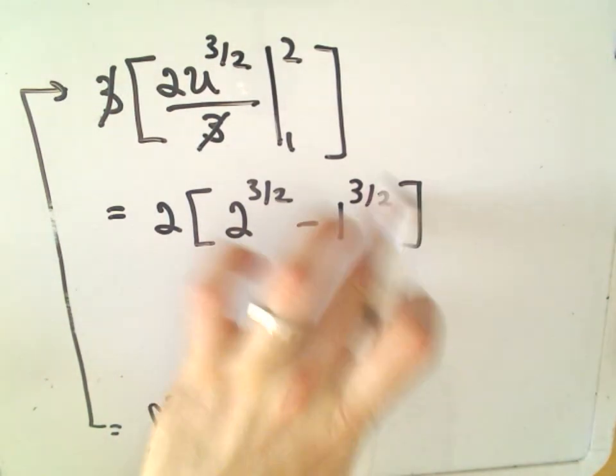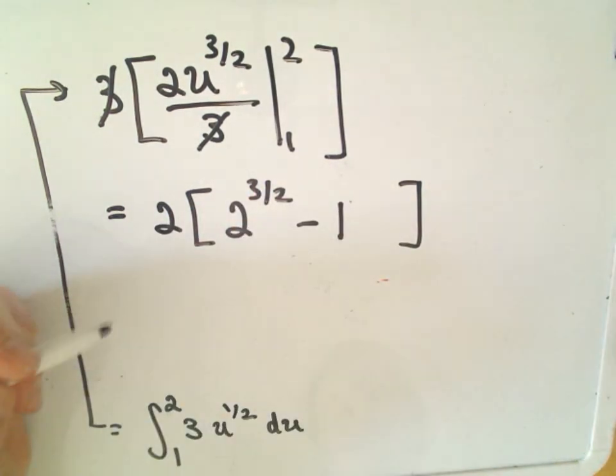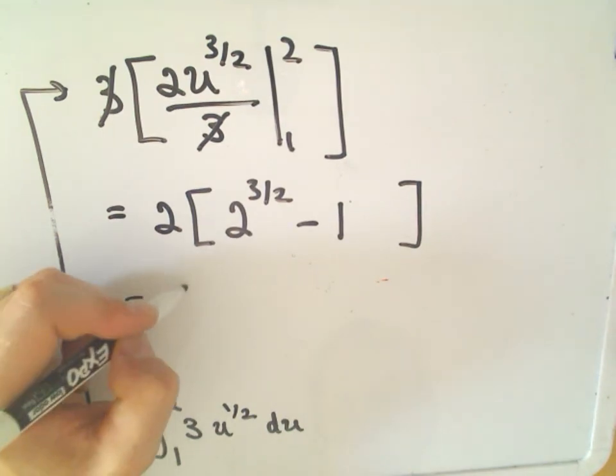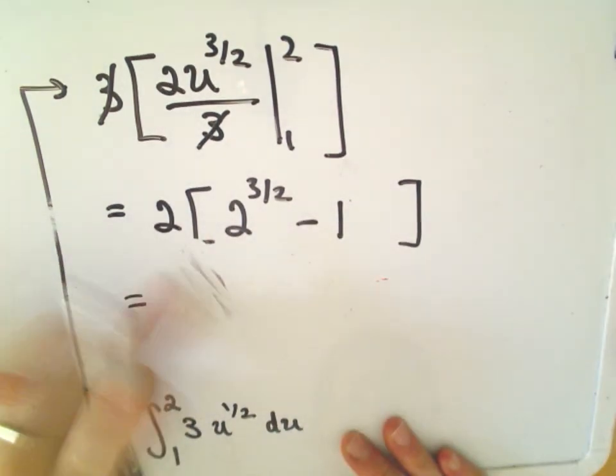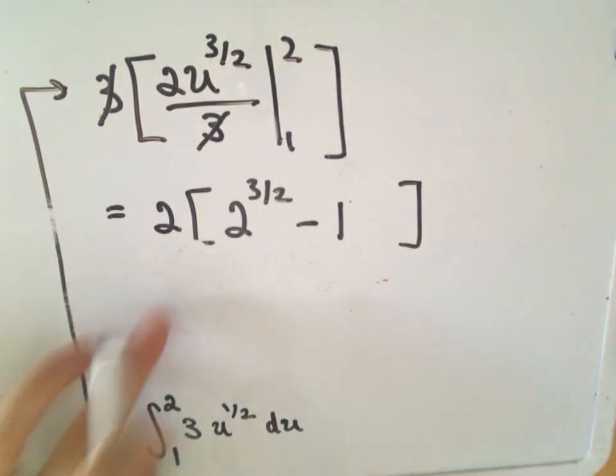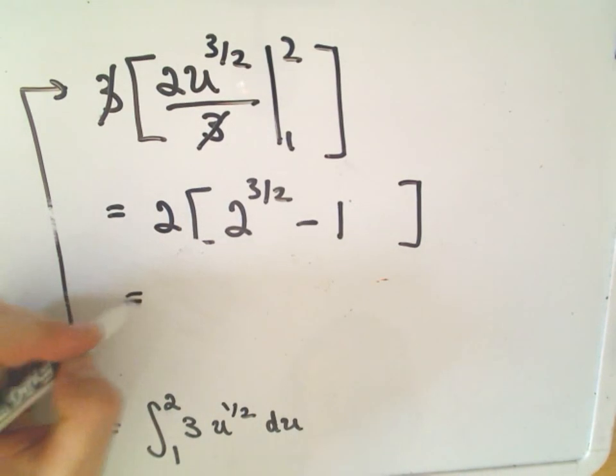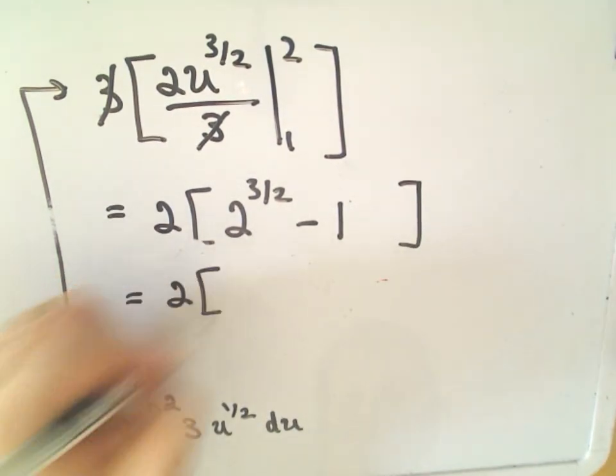I'm going to go ahead and cancel the 3s out. So we've got 2, we would have 2 raised to the 3 halves power, minus the lower limit of integration which would be 1 to the 3 halves power. Well, 1 to any power is just 1. I guess you could clean this up a little bit. So this would be 2 to the, actually I'm going to leave it alone.